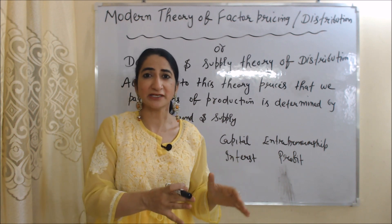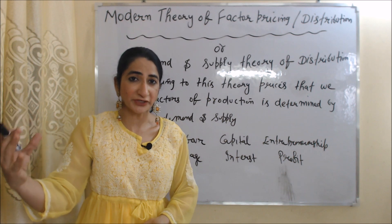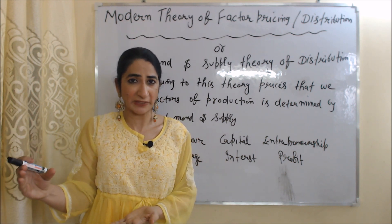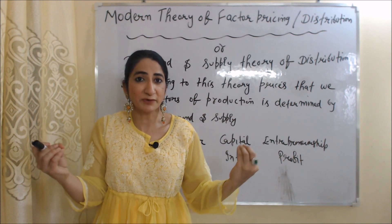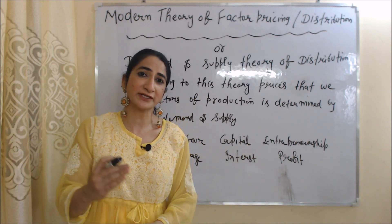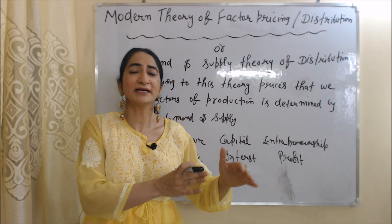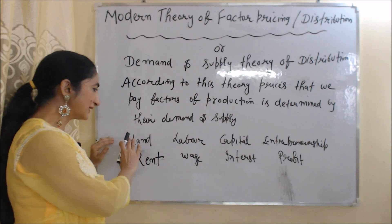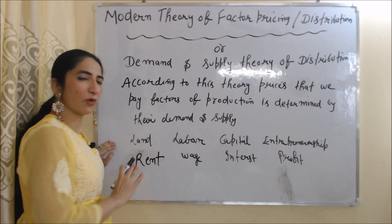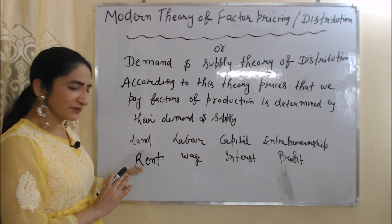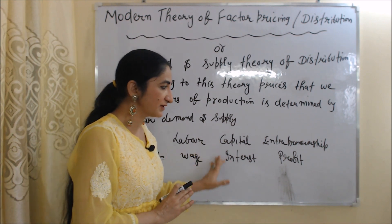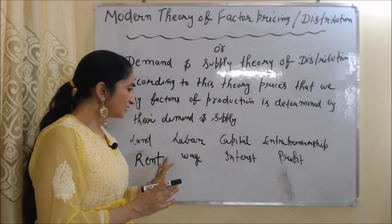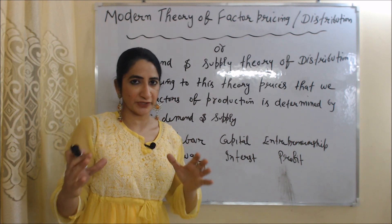According to this theory, the prices that we pay to factors of production for their services are determined by their demand and supply. As we know, there are mainly four factors of production: land, labor, capital, and entrepreneurship. Land receives rent, labor receives wage, capital receives interest, and entrepreneurship receives profit. So rent, wage, interest, and profit are the prices of factors of production.